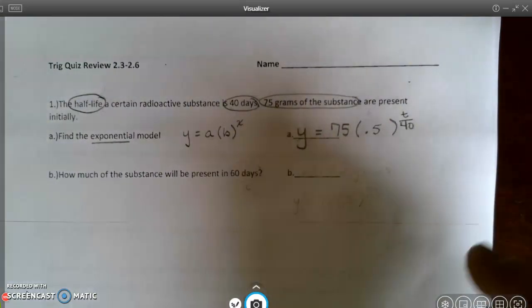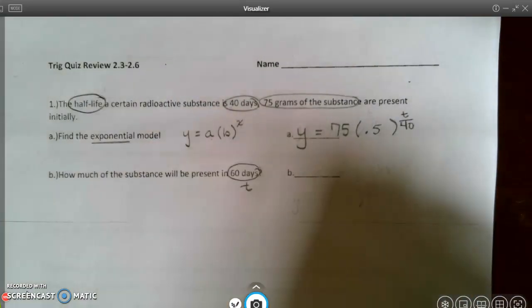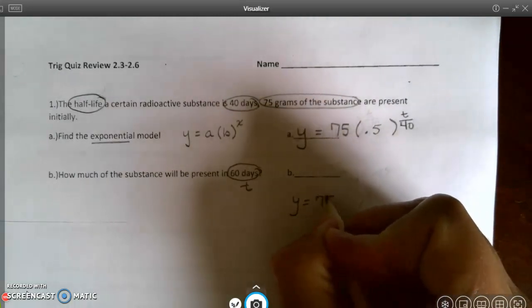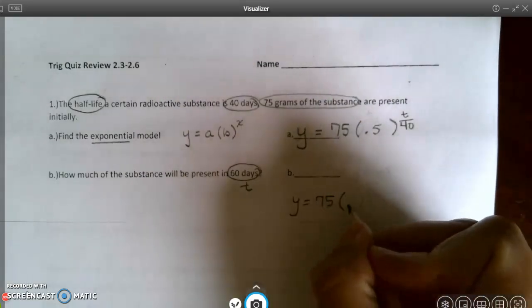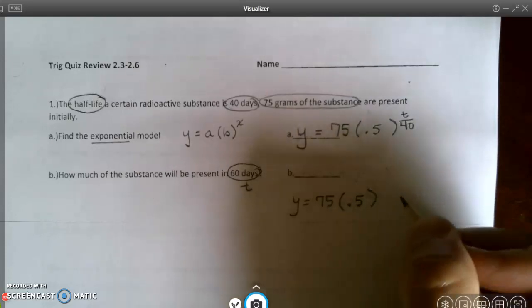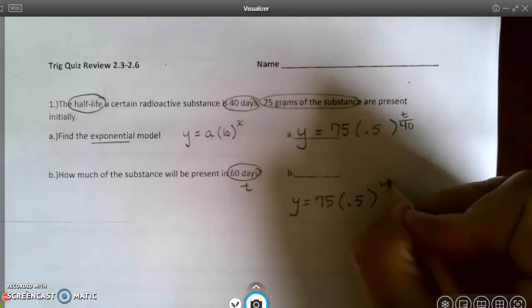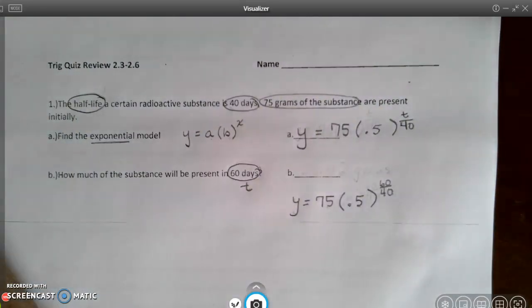How much of the substance will be present in 60 days? So 60 days is going to be my T. I'm going to show my work. I like to do that on a quiz so that if I get something wrong, I can maybe get partial credit because I've shown my work. So 75 is my starting amount, 0.5 for a half-life. And how many half-lives am I going to have? I'm going to have 60 divided by 40 because 60 is the total, and 40 is how many days are in a half-life. So I'm going to move to my calculator now.